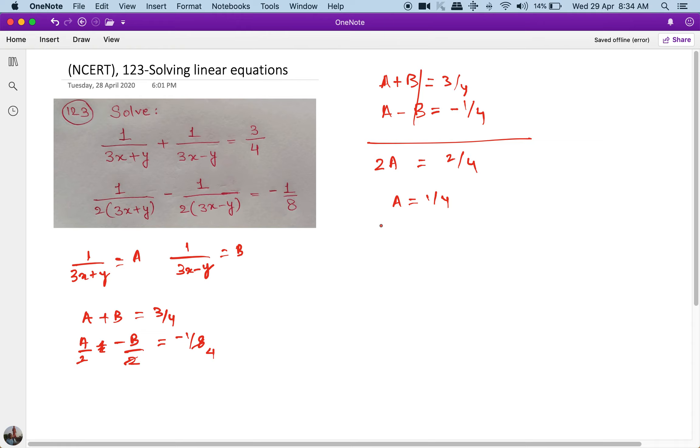If A is equal to 1 upon 4, let me put that over here in the first part. So it becomes 1 upon 4 plus B is equal to 3 upon 4, and B will be equal to 3 minus 1 upon 4, that is equal to 2 upon 4. So B will be equal to half.